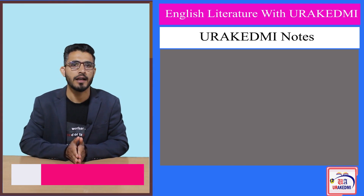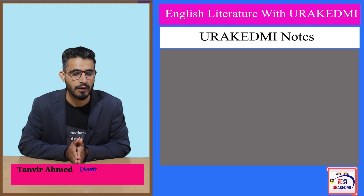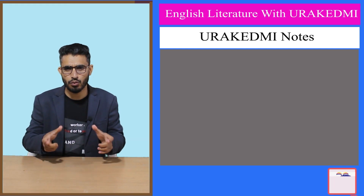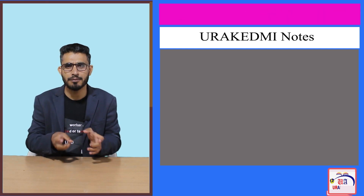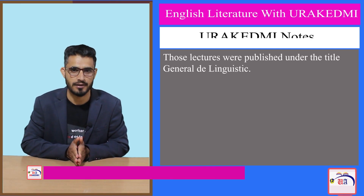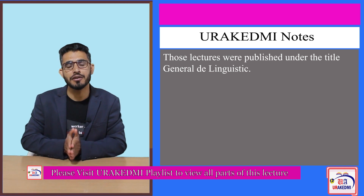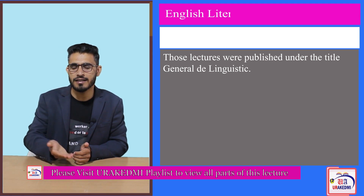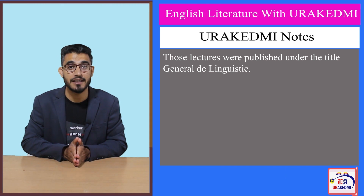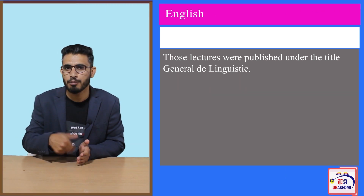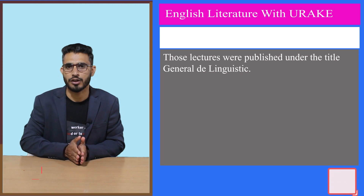In 1915, a Swiss linguist by the name Ferdinand de Saussure delivered some lectures, and those lectures were later published in a book titled 'Course in General Linguistics.' The Course in General Linguistics would later be translated into English in the 1950s and would become very famous in the 1950s and 60s, before deconstruction comes.